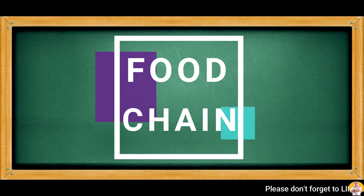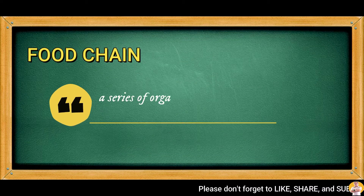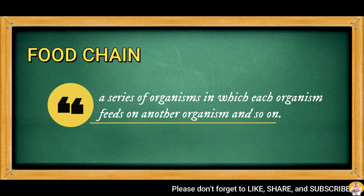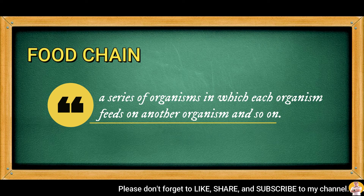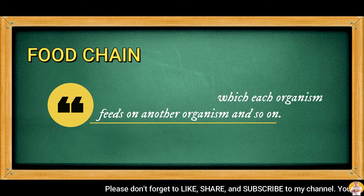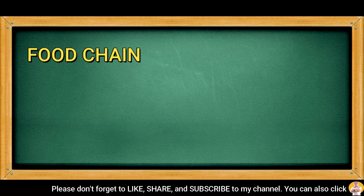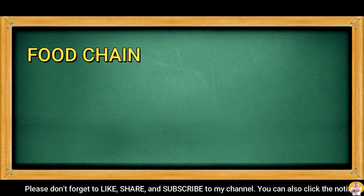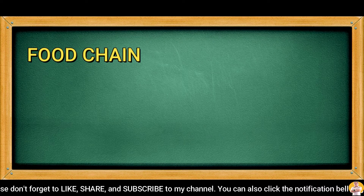The feeding relationships among organisms can be shown by a food chain. A food chain is a series of organisms in which each organism feeds on another organism and so on. A food chain always begins with a producer. These are examples of food chains.